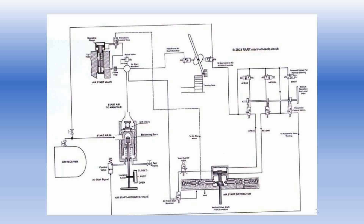Depending on the direction you give the kick — be it ahead or astern — the corresponding solenoid valves get activated. Taking an ahead movement as an example, two solenoid valves get actuated: the start solenoid and the ahead solenoid valve. When both these get actuated, the air passes through them and hits the pneumatic control valve. This pneumatic control valve gets actuated; air passes through the ahead pneumatic control valve, goes to the top of the servo piston of the distributor, pushes the piston down, brings the ahead cam into play, and goes to the starting air cutoff valve.